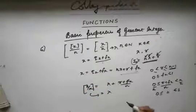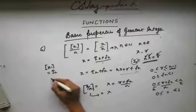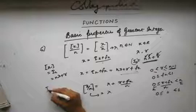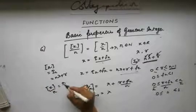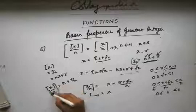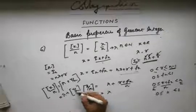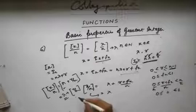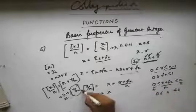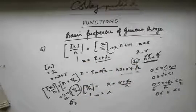Now let's compute ⌊⌊x⌋/n⌋. ⌊x⌋ is ix, which can be represented as n·λ plus r. So ⌊x⌋/n equals λ plus r/n. Taking the floor of this, I can take out λ since it's an integer, leaving ⌊r/n⌋. Since r lies between 0 and n minus 1, r/n is less than 1, so ⌊r/n⌋ equals 0, giving λ. Both sides equal λ, so this property is verified.